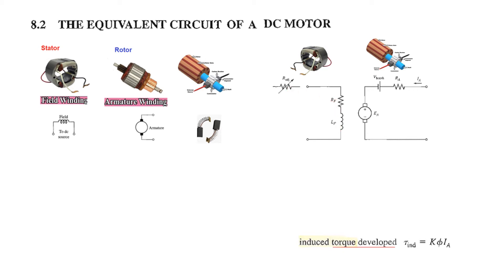The field circuit is represented with some resistance in the field coils and an inductive part, and you may add an adjustable resistor to it. The armature or rotor part is represented by a voltage source called EA, also known as the back EMF or induced EMF.